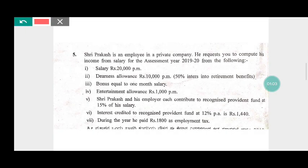The question is asked on income from salary. Sri Prakash is an employee in a private company. He requests you to compute his income from salary for the assessment year 1920. For that purpose, the following information is given. The first item is the basic salary per month. Dearness allowances are rupees 1,000 per month, with 50 percent entering into retirement benefit.